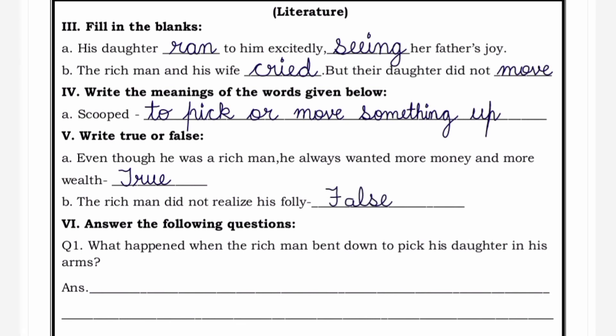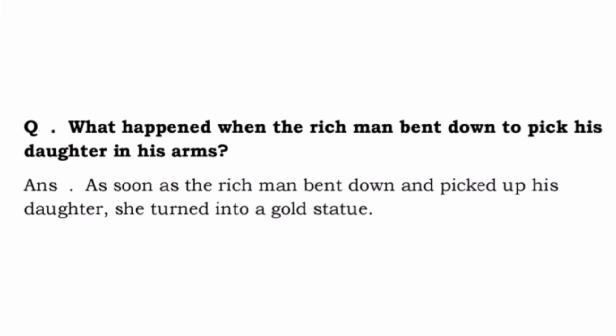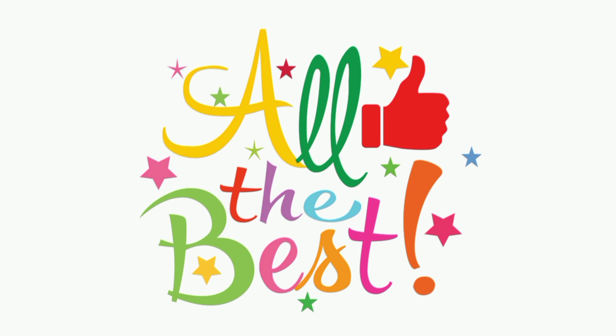Now let's move to the last part: answer the following questions. A question is given: 'What happened when the rich man bent down to pick his daughter in his arms?' The answer is: as soon as the rich man bent down and picked up his daughter, she turned into a gold statue. So just like this, answer whatever questions are asked from the chapter. I'm sure you all will do very well in your test. Wishing all my lovely students all the best. This is all for today — till we meet next, take care, stay happy and stay healthy. All the best for your exams.